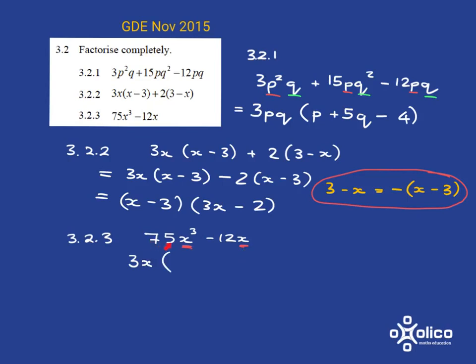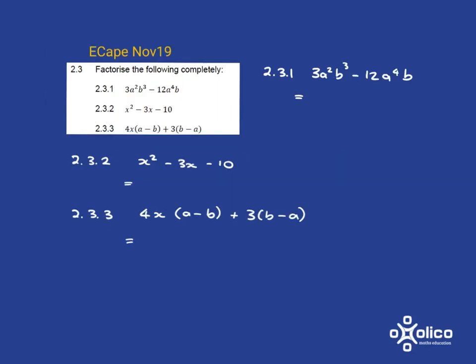All right, so what's left from the 75? Well, 25 times 3 gives me 75. And what's left from the x cubed is just x squared. And then what's left from the 12? Well, 3 times 4 is 12. And I've taken out the x, so I've got no x's left. Now, this thing here I should immediately recognize as my difference of 2 squares. And my difference of 2 squares is a lovely easy one. It's 5x, 5x, plus, and then a minus, and it's a 2 and a 2.